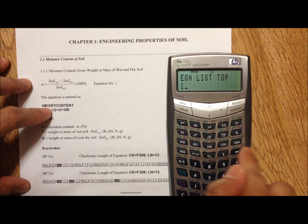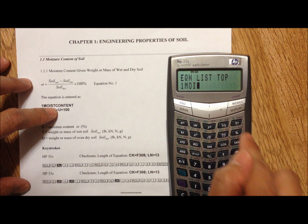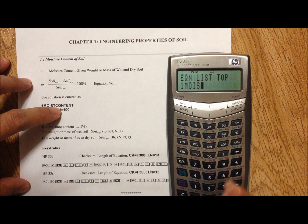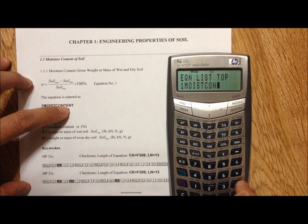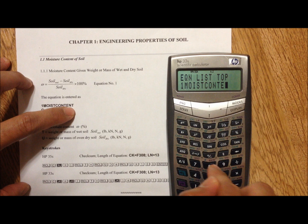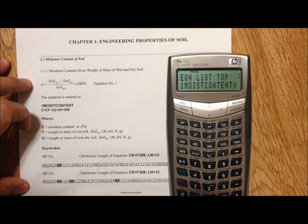enter the brief description MOISTCONTENT using the Recall button for each letter: M, O, I, S, T, C, O, N, T, E, N, T, then enter.